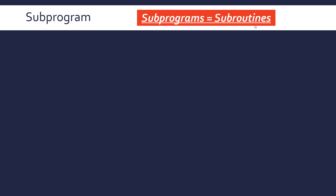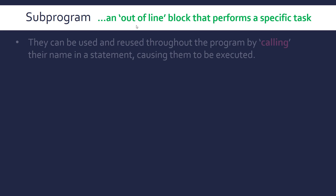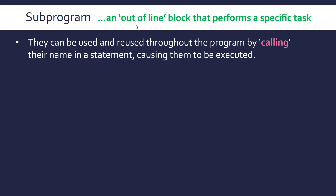I tend to call them subroutines, but I'm going to call them subprograms — it doesn't matter. So a subprogram or subroutine is an out-of-line block of code that performs a specific task. They get used and reused throughout the program by calling their name in a statement, causing them to be executed.